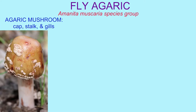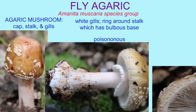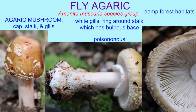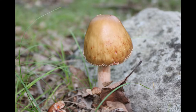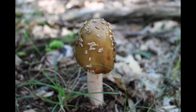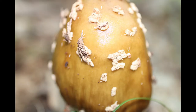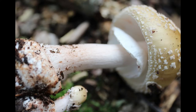Fly agaric is an agaric mushroom, meaning it has a cap, stalk, and gills. The gills are white and are free from the stalk. The stalk is notable, as in other amanita mushrooms, in that it has a fleshy ring around it in the midsection. It has a bulbous base with some irregular rings at the base of the stalk.